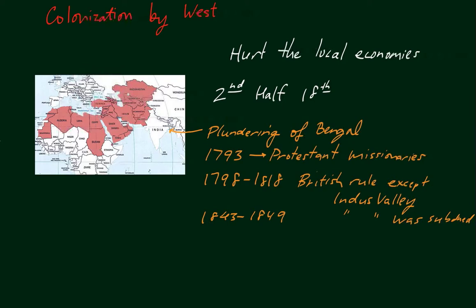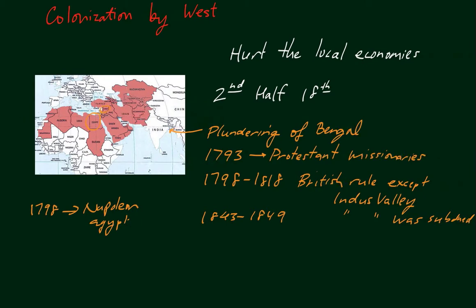Meanwhile, the French, led by Napoleon, were trying to establish their own empire. Right around 1798, Napoleon tried to occupy Egypt — here on the map — and while occupying Egypt, he was also trying to establish a base in the Suez that would essentially cut British sea routes to India. He ultimately failed in his expeditions to both Egypt and Syria, located right here on the map.